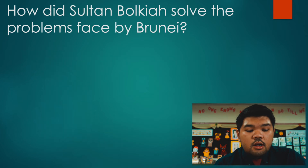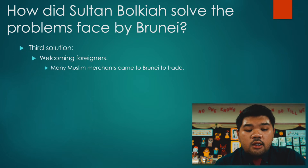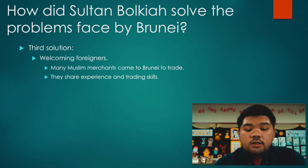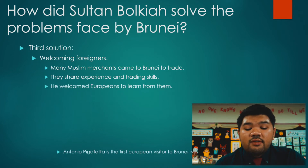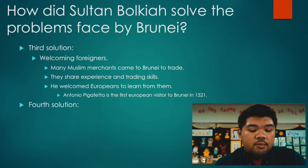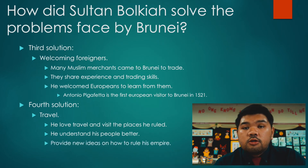The third solution was welcoming foreigners. Sultan Bolkiah welcomed foreigners, and many Muslim merchants came to Brunei to trade. These Muslim merchants also shared their experience and trading skills that could benefit Brunei. He also welcomed Europeans to learn from them. The first European visitor to Brunei in 1521 was Antonio Pigafetta. The fourth solution was that Sultan Bolkiah loved to travel and visit the places he ruled so that he could understand his people better, and it also provided him new ideas on how to rule the Brunei empire.